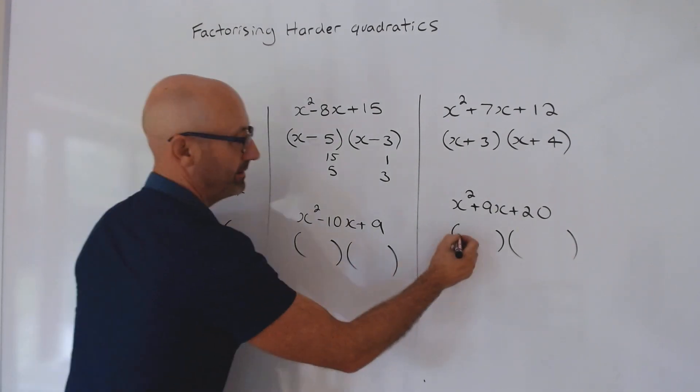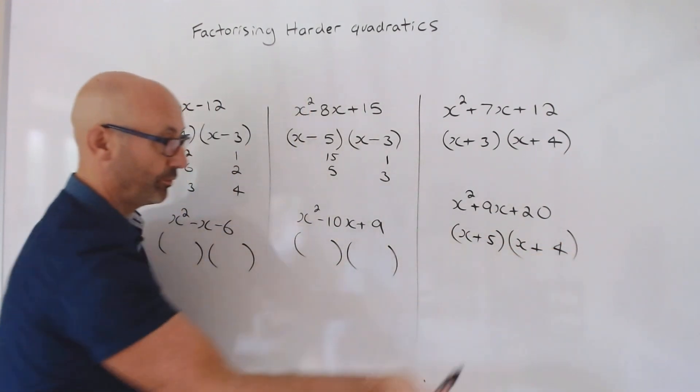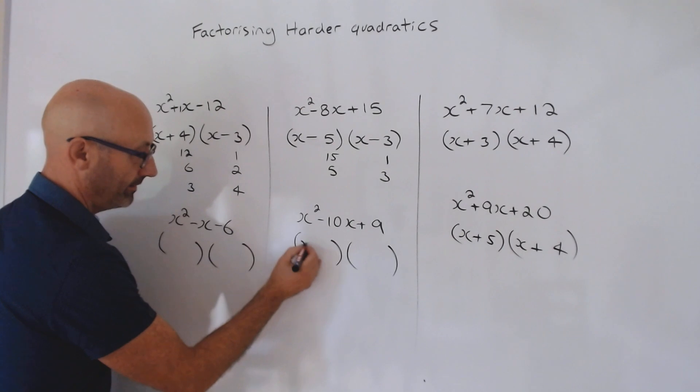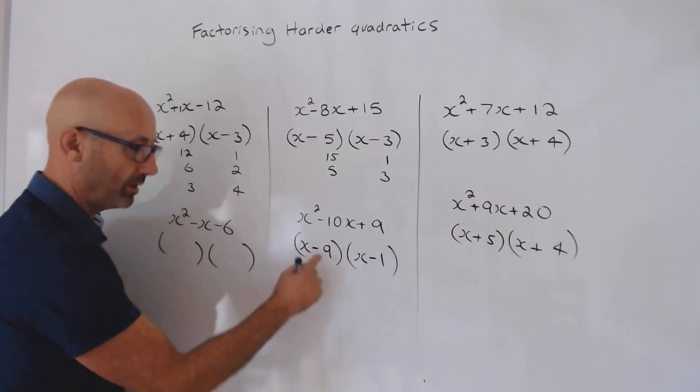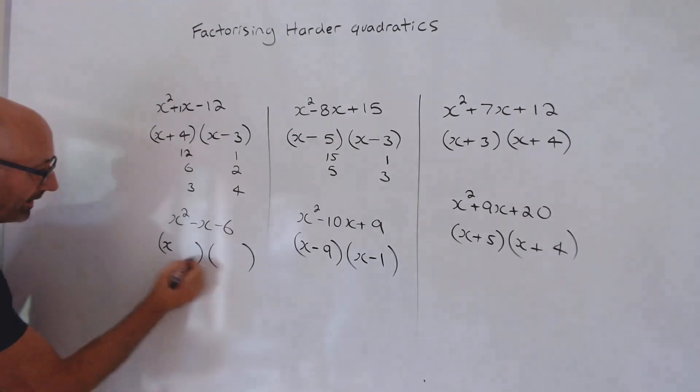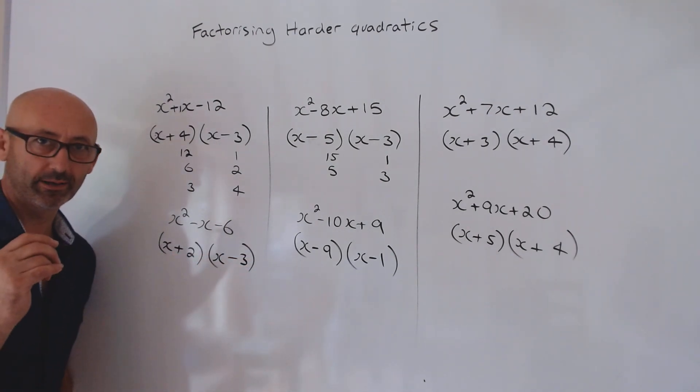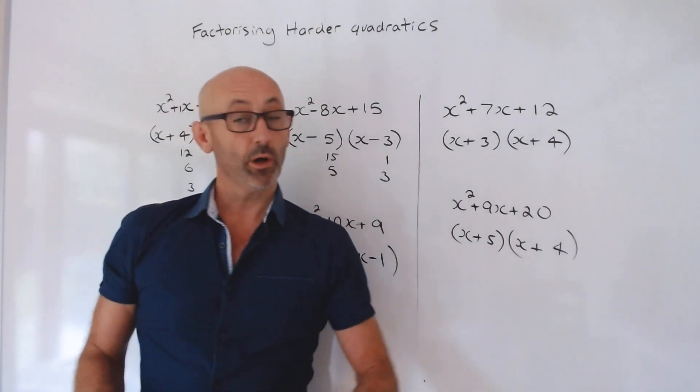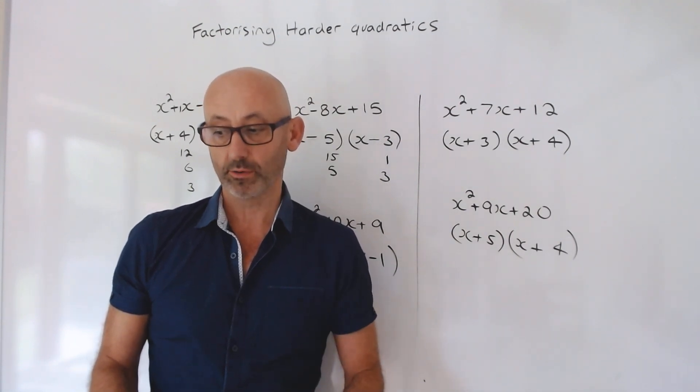Right, so the answers are going to be: that's going to be plus plus, 5 and 4 or 4 and 5. Check me Nina, please. Then that's going to be minus minus and 9 and 1. Sometimes people find this one a bit confusing. And here, X and X, then that's going to be plus minus and it's going to be 3 and 2. Fantastic, well done if you got those three right.